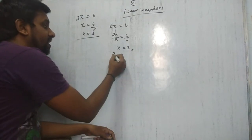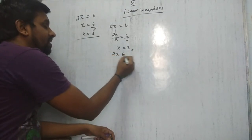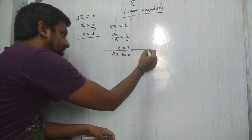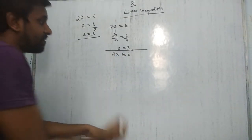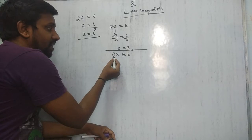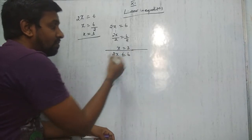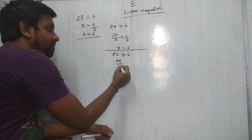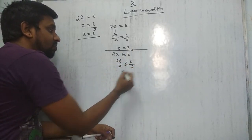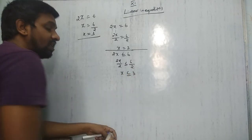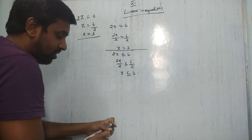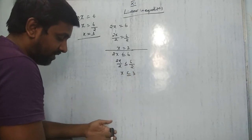Now for the same sum as an inequality: 2x ≤ 6. You divide both sides by 2: 2x/2 ≤ 6/2, so x ≤ 3. You should not stop here — you should also draw the number line and find the interval.